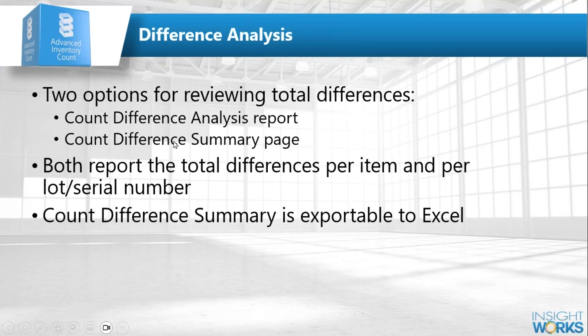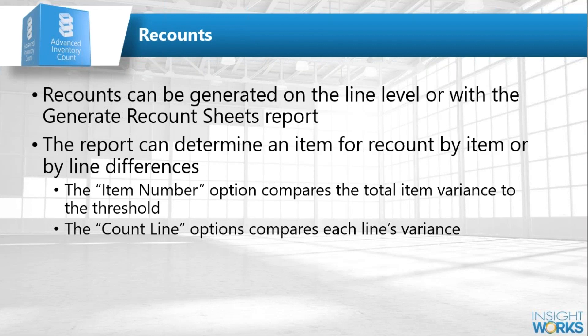With the master sheet defined, you run difference analysis. There are two tools: the Count Difference Analysis report — printable or exportable to Excel — showing totals and discrepancies; and the Count Difference Summary page, which is an interactive screen listing all discrepancies with the ability to view things differently. Both reconcile by lot number and serial number. Once analysis is complete, if there are significant discrepancies, you generate a recount sheet with a threshold — for example, anything out by more than five percent or more than a hundred dollars automatically gets added to a recount sheet.